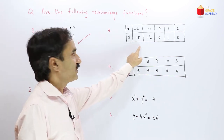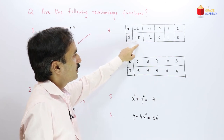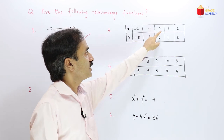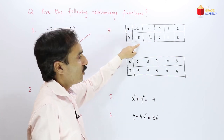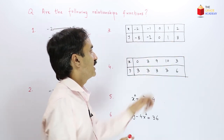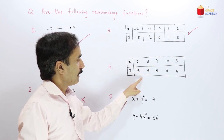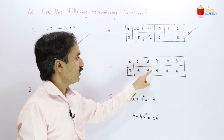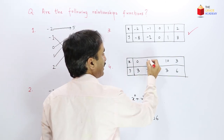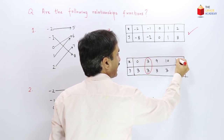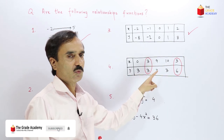For the third relationship given as a table: minus 2 to minus 8, minus 1 to 2, 0 to 0, 1 to 1, and 2 to 8. For each x there is one and only one value of y, so this is a function. In the fourth table: 0 to 3, 3 to 3, 9 to 3, 10 to 3, and 3 to 6. Here x equals 3 is joined to both 3 and 6, giving two y values for the same x, so this is not a function.